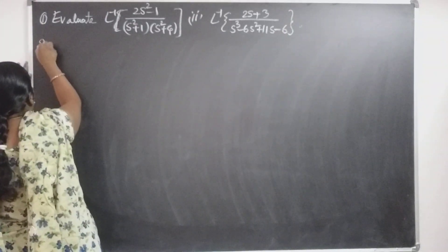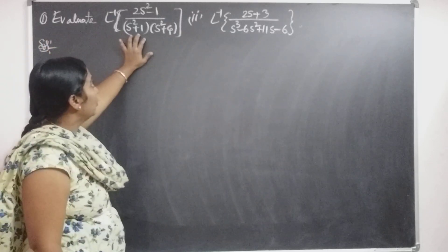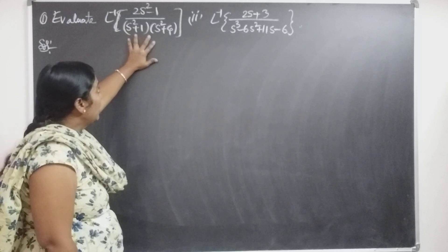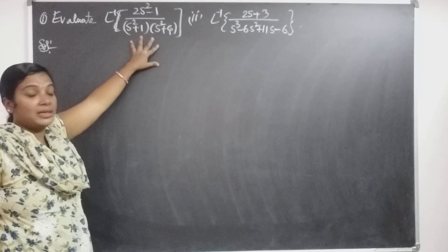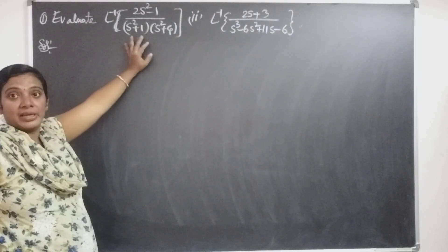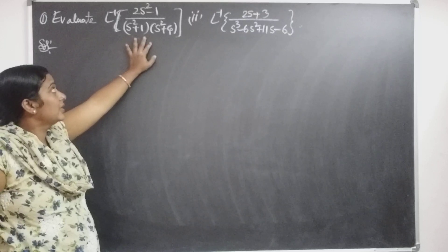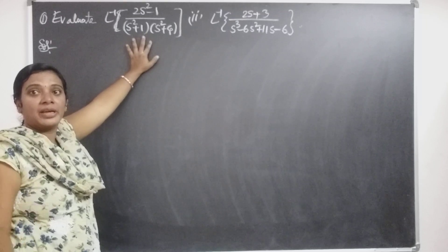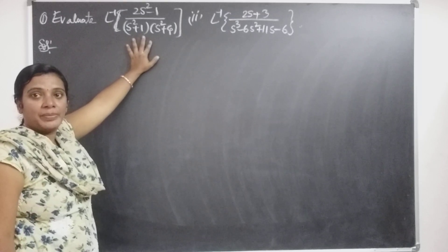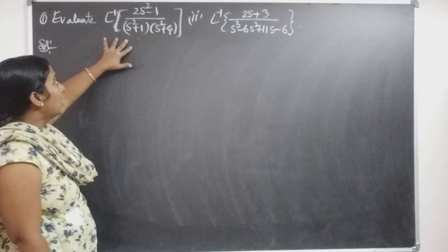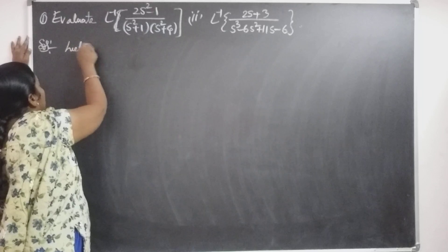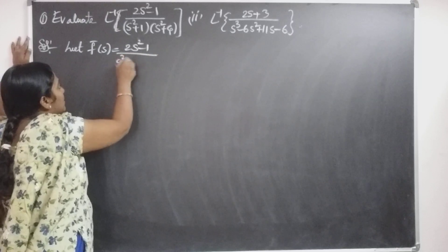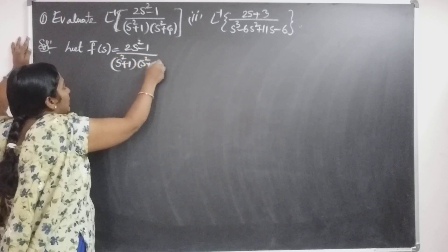In earlier classes I discussed only the s² + a² form, where only a single factor is in the denominator. But here we have s² + 1 times s² + 4 — two factors in the denominator. So first of all we find the partial fraction. By using partial fractions we can separate the given function f̄(s), where f̄(s) = (2s² − 1) / [(s² + 1)(s² + 4)].